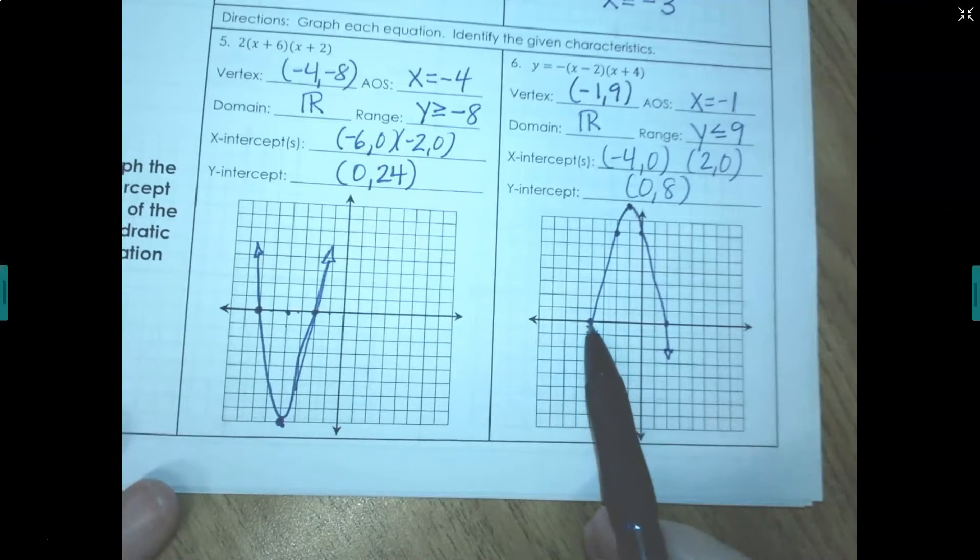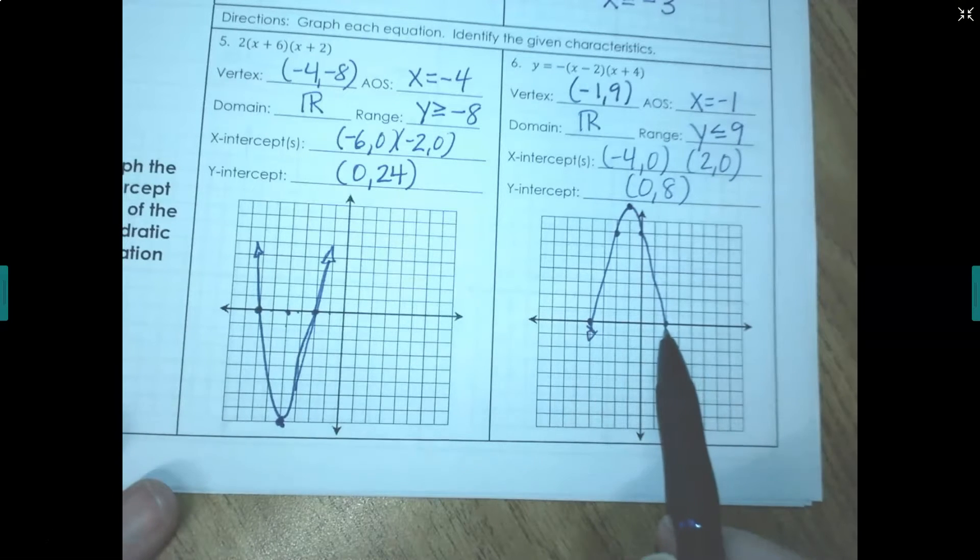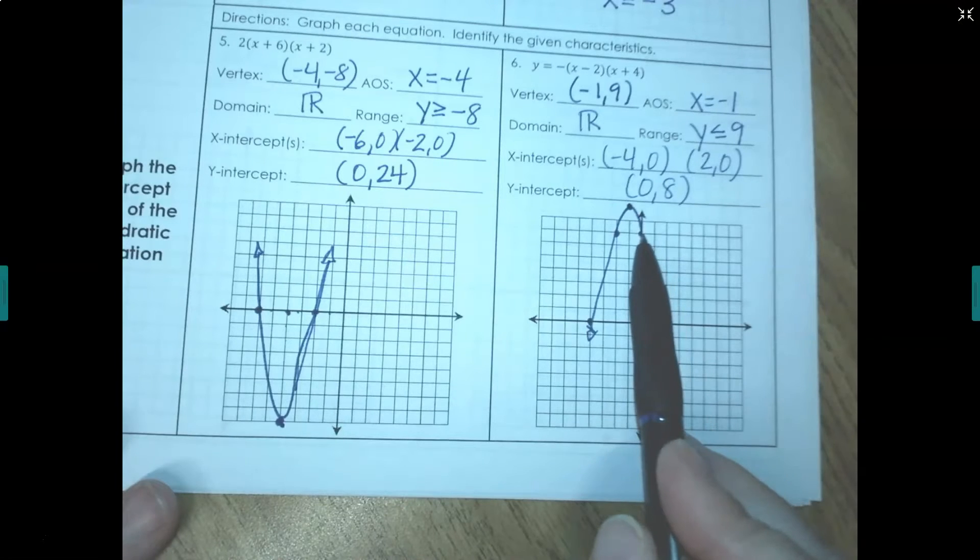Your x-intercepts, there's two of them occurred at negative 4, 0, and 2, 0, and our y-intercept happened here at 0, 8.